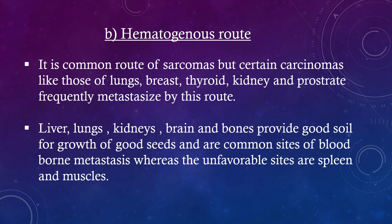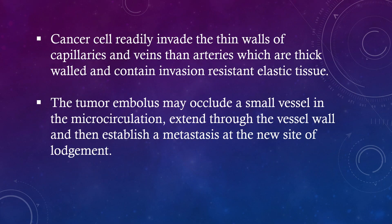Hematogenous route: it is the common route of sarcomas, but certain carcinomas — those of the lungs, breast, thyroid, kidney and prostate — frequently metastasize by this route. Liver, lungs, kidneys, brain and bones provide good soil for growth and are common sites of blood-borne metastasis, whereas unfavorable sites are the spleen and muscles. Cancer cells readily invade the thin walls of capillaries and veins rather than arteries, which are thick-walled and contain invasion-resistant elastic tissue.